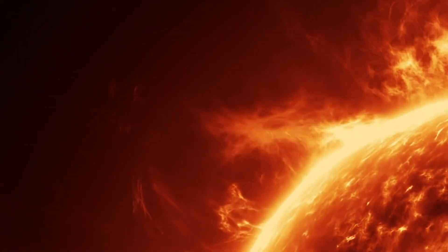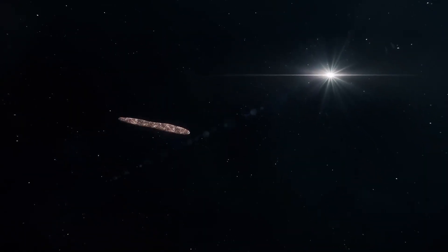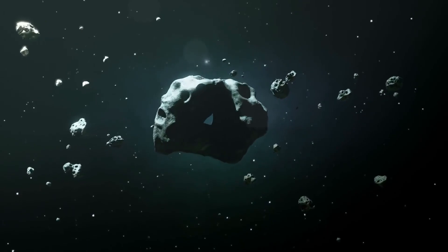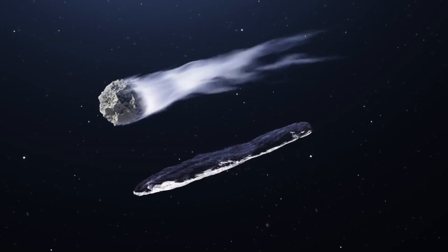Furthermore, the object's trajectory appeared to be influenced by the sun's gravity, just like a natural object, which argued against the notion of a propulsion system capable of maneuvering the ship. So, what was Oumuamua if it wasn't an extraterrestrial spacecraft?